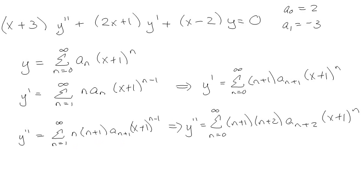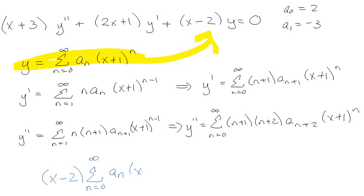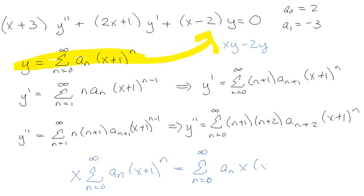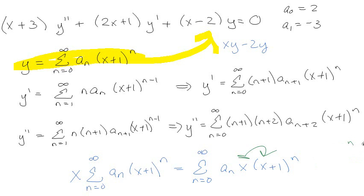Now if past experience is any indication, I should just straight up plug in these values. If I try to write x times y, for example as x times the summation of aₙ(x+1)^n, the problem is there's no way for me to combine this x into the (x+1)^n without doing all kinds of craziness. The whole reason we like power series is that we get beautiful terms where we always have the same thing to the same power — and I no longer have that. So this is something I really have to fix.